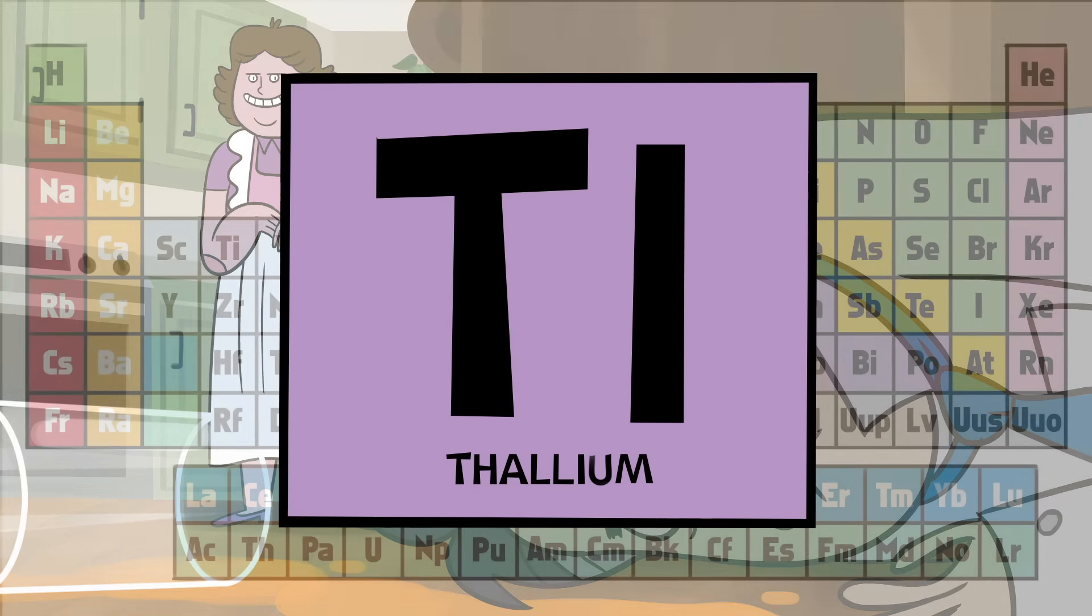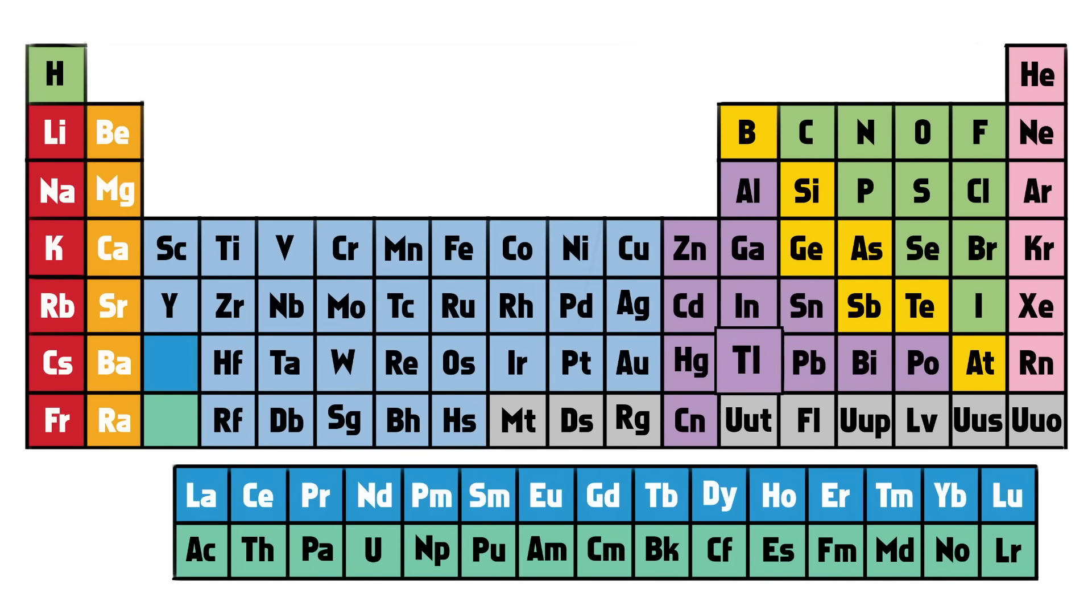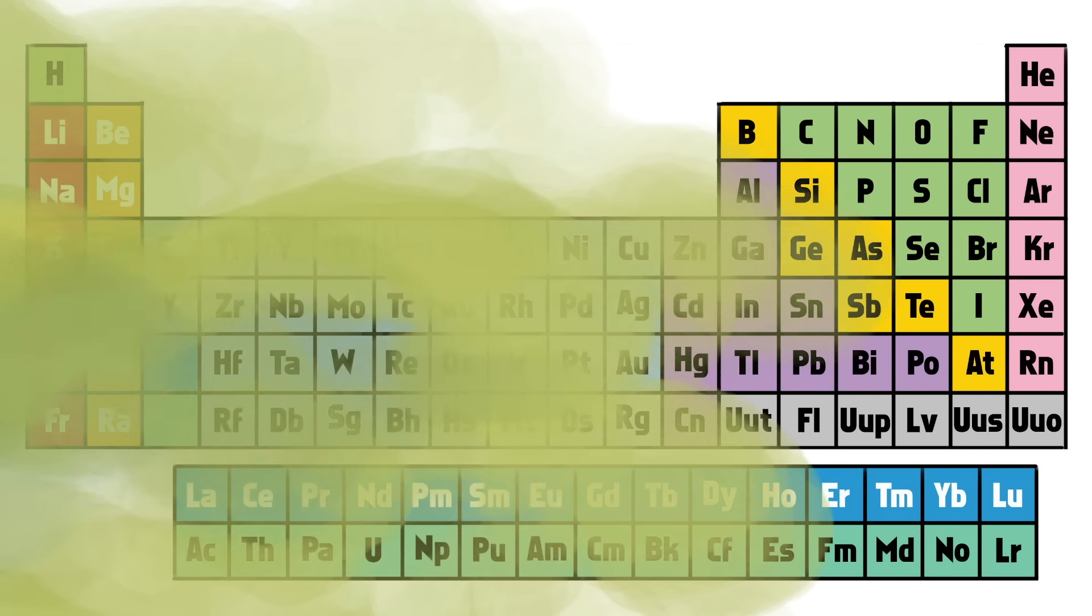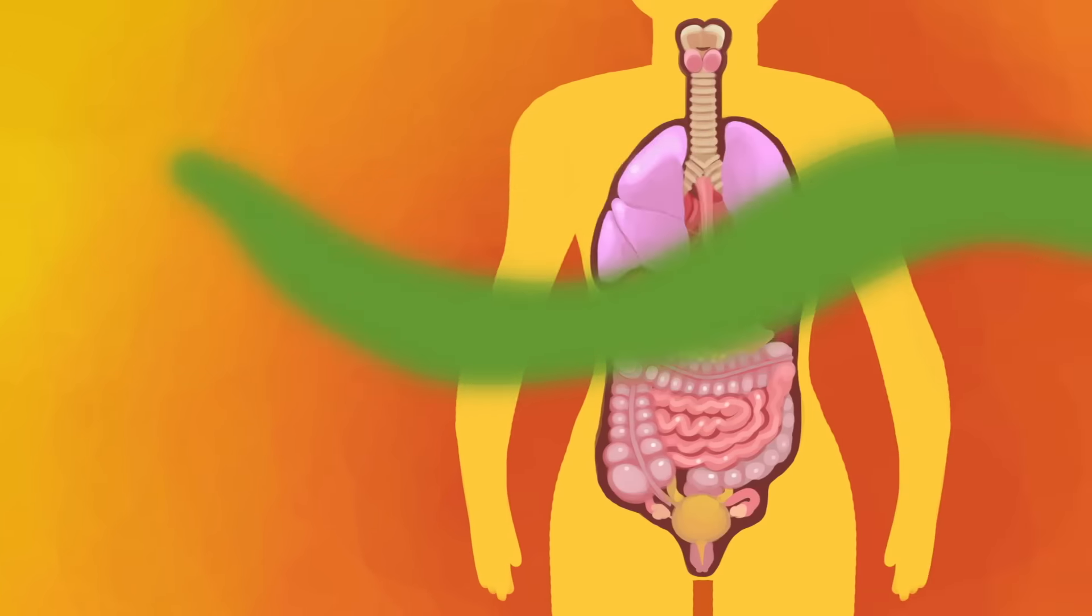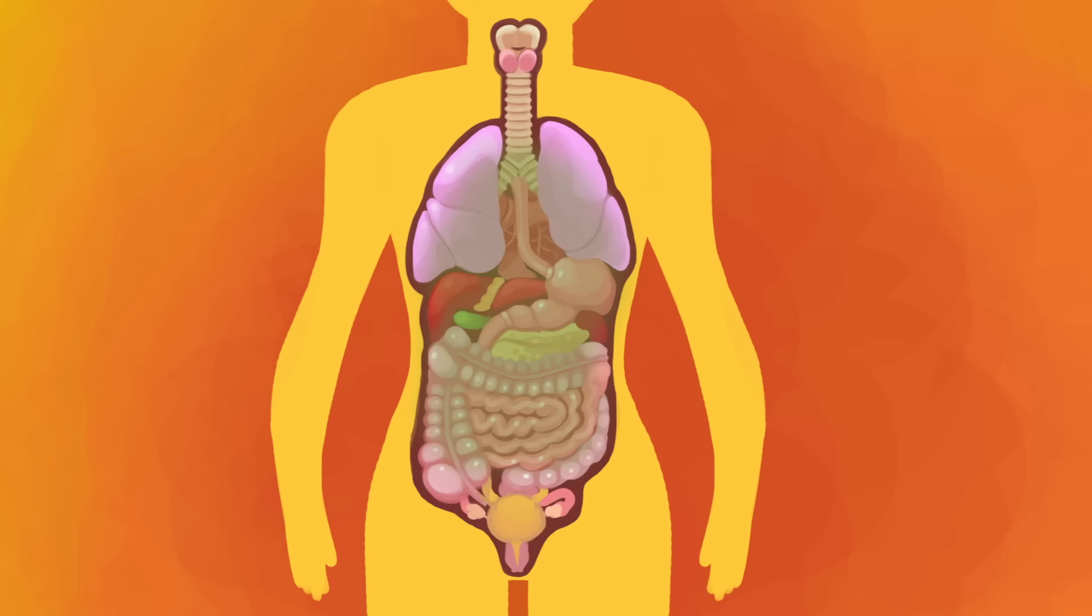At the time, thallium's risks were well known, so how were the perpetrators able to get their hands on such a lethal element? And thallium isn't the only dangerous element on the periodic table. Within this tabular array loom several potential threats, each with their own unique method of imposing destruction.